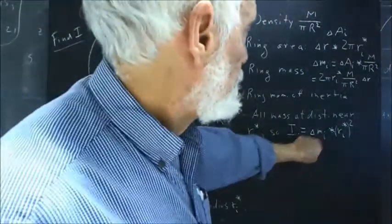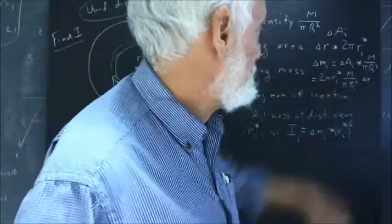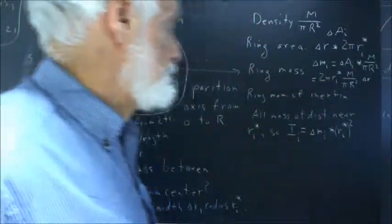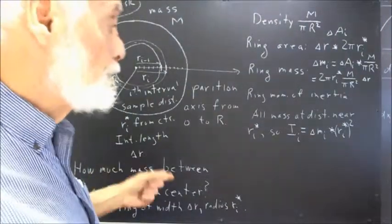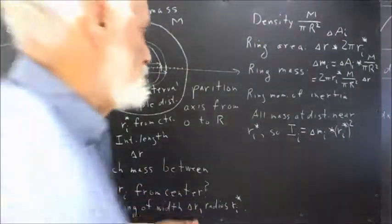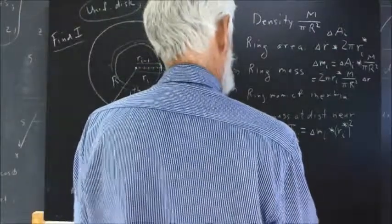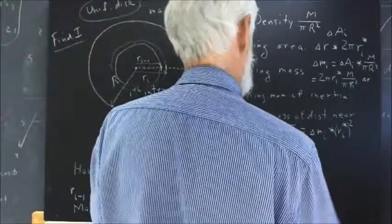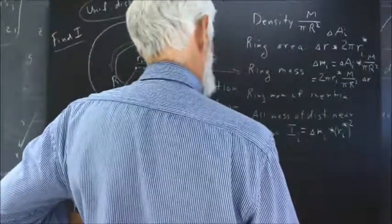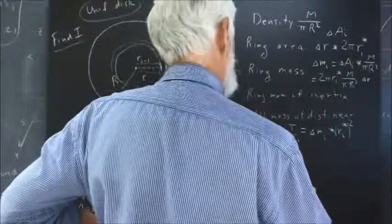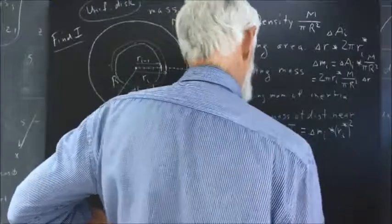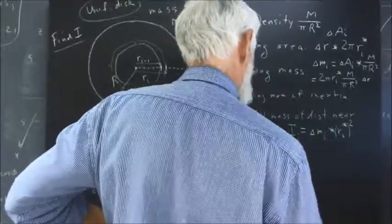Of course, we have an expression for delta M sub i that does depend on R sub i, so we've got to use that. Okay, I'll say equals what, and total moment of inertia is approximately what sum which approaches what interval?